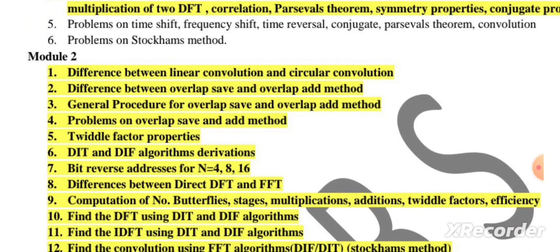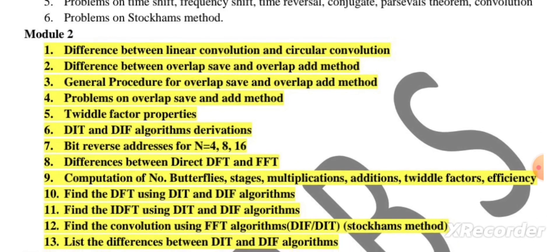If you see Module 2, difference between linear convolution and circular convolution may be asked. Sometimes theory questions need to be put on the question paper. These types of questions will be asked: difference between overlap save and overlap add, general procedure for overlap save and overlap add method. Problems on overlap save and add method. Usually problems on overlap save and add method will be there.